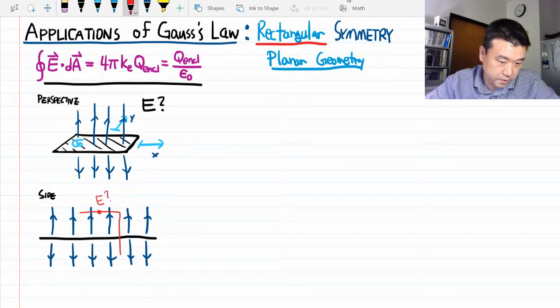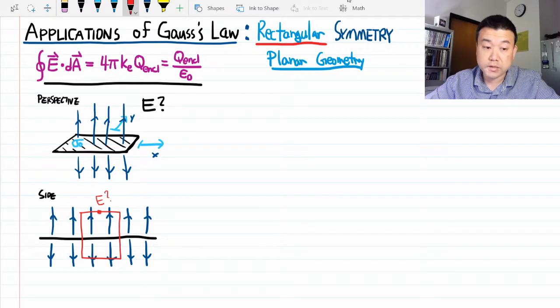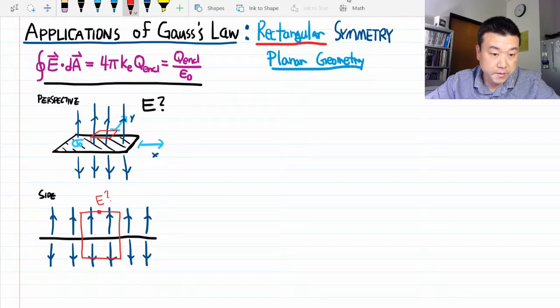that surface will look like this. It's very carefully chosen. I will go over it in a little bit. Or let me draw this in the perspective view so that you have some idea of what the three-dimensional shape of this Gaussian surface is.